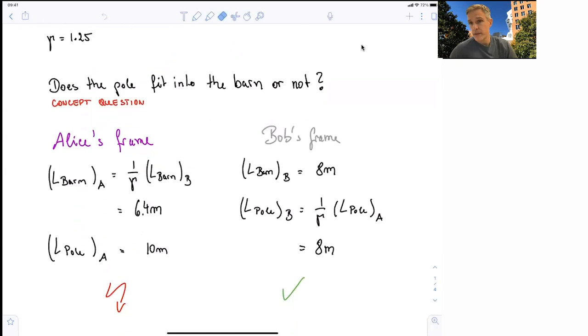In Bob's frame, the barn is 8 meters long, and the pole is Lorentz-contracted, also 8 meters long. So Bob will say, yeah, it fits. It just barely fits. They're exactly the same size. So yes, the pole fits into the barn. And here is where you might think, this is an absolute statement. They cannot be both right. We will see they can. They can both be right.